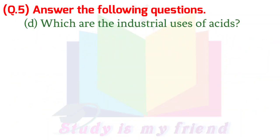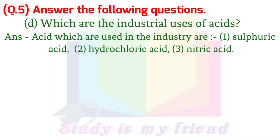D. Which are the industrial uses of acids? Answer: Acids which are used in the industry are: 1. Sulphuric acid, 2. Hydrochloric acid, 3. Nitric acid.